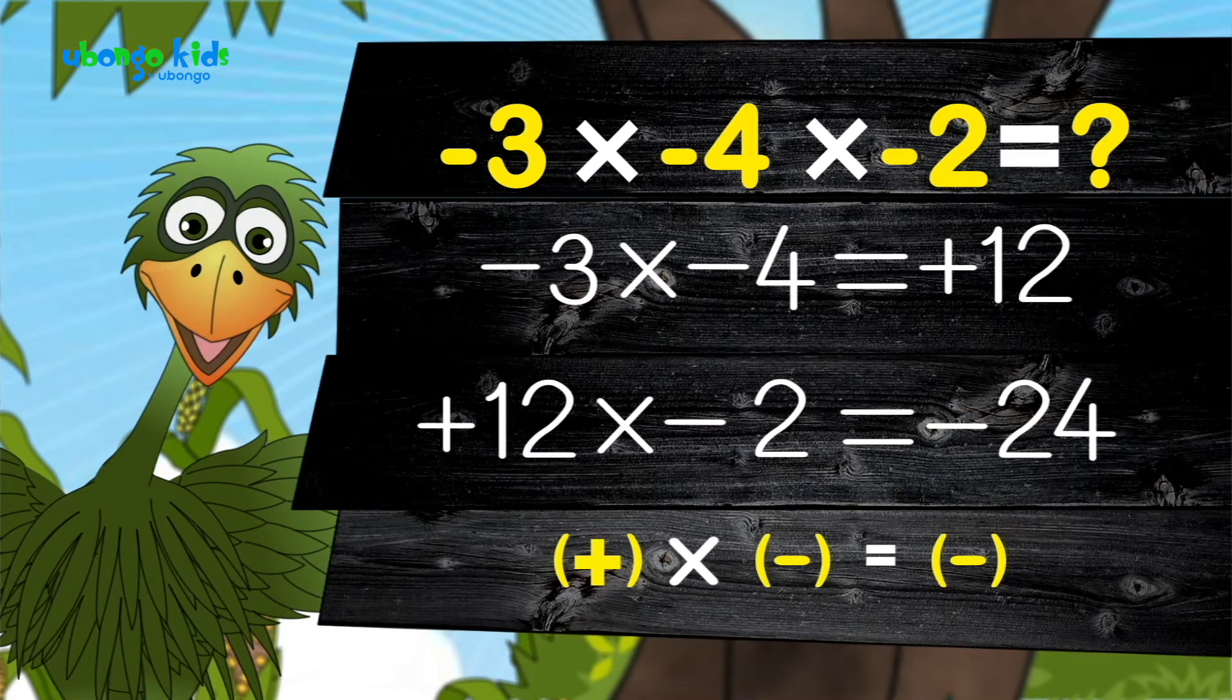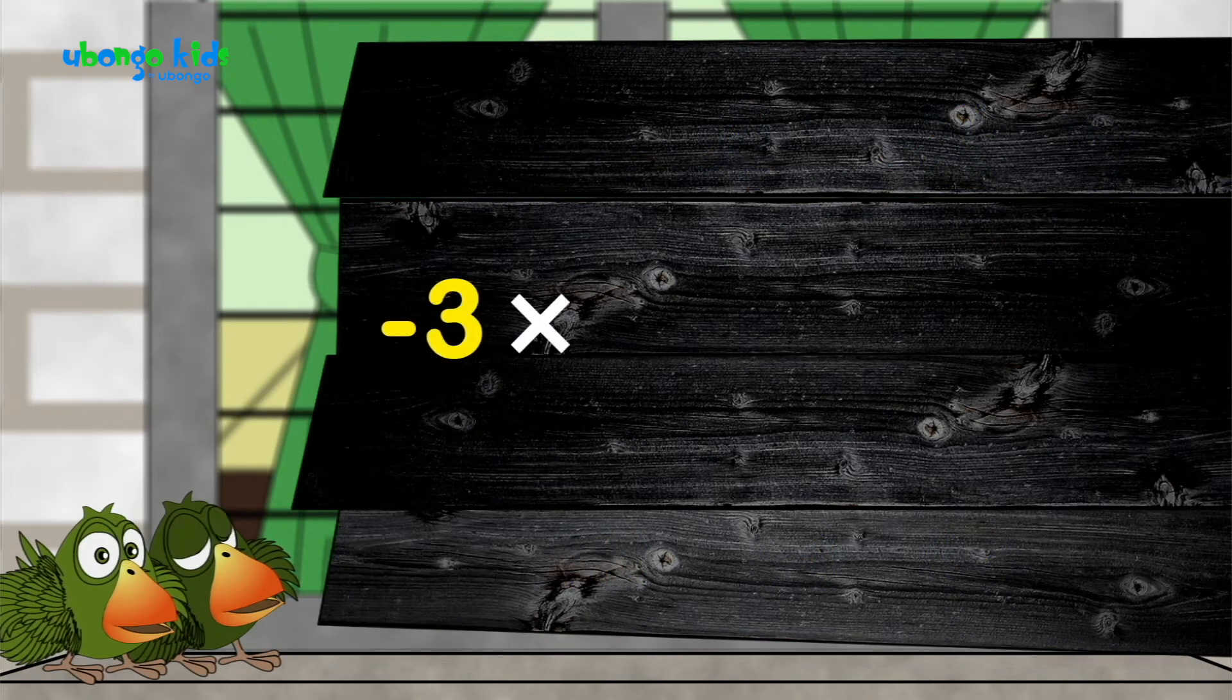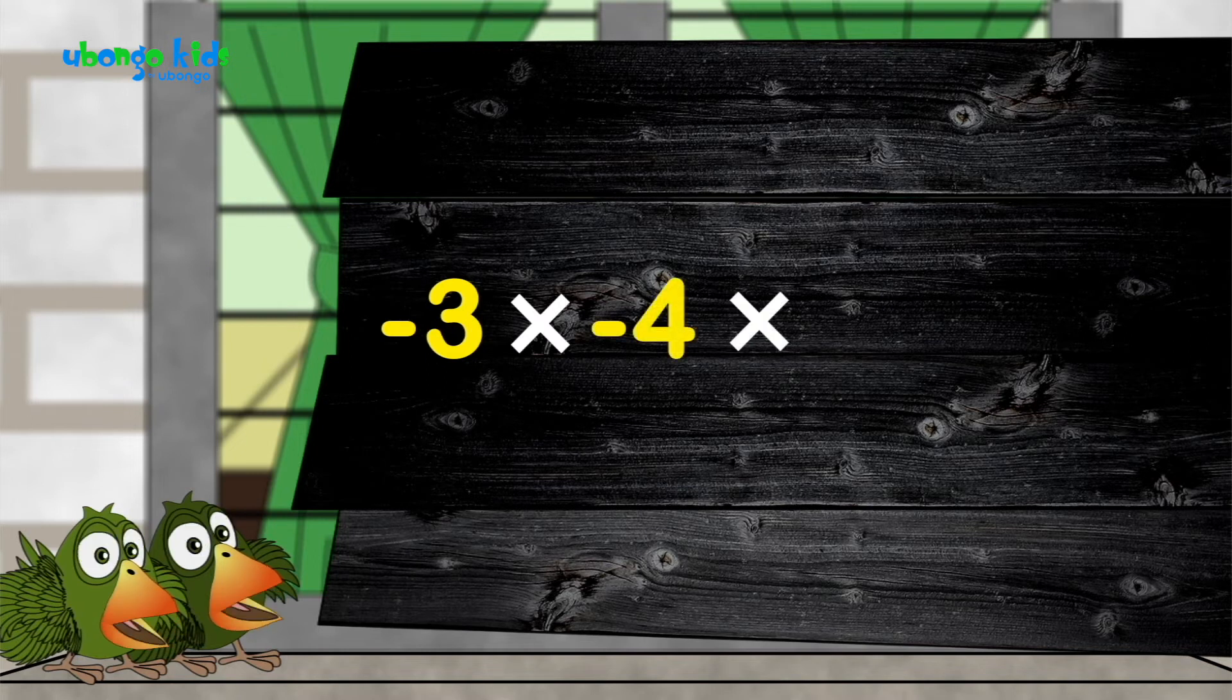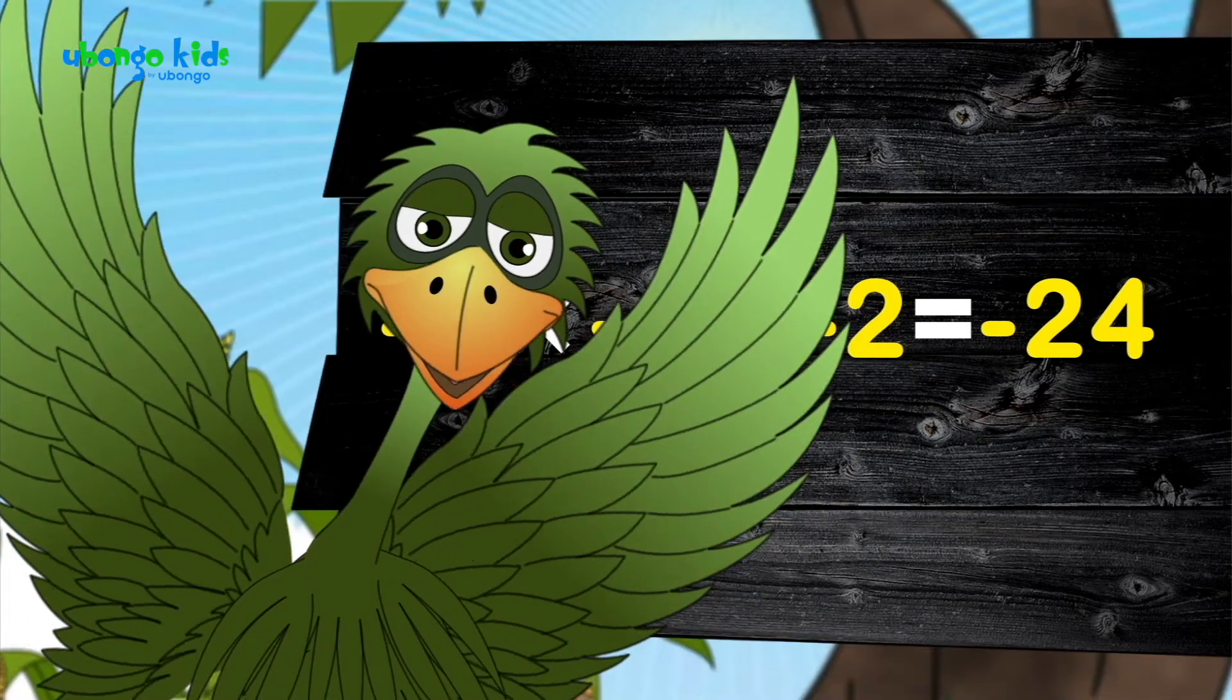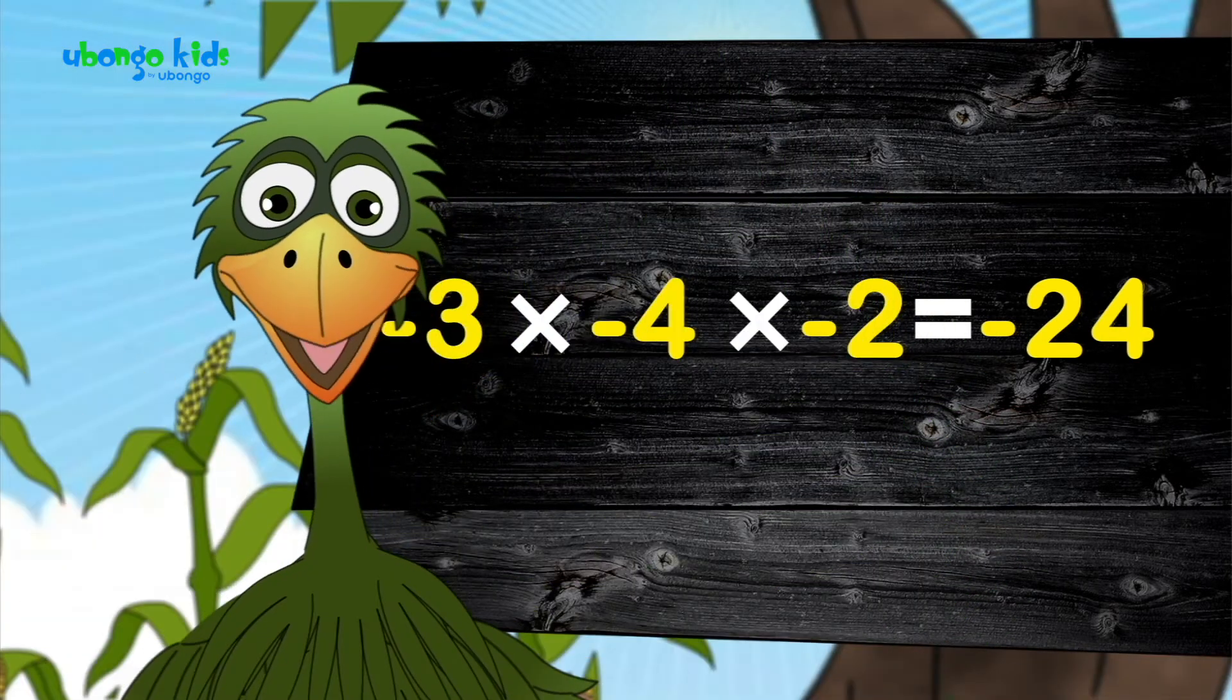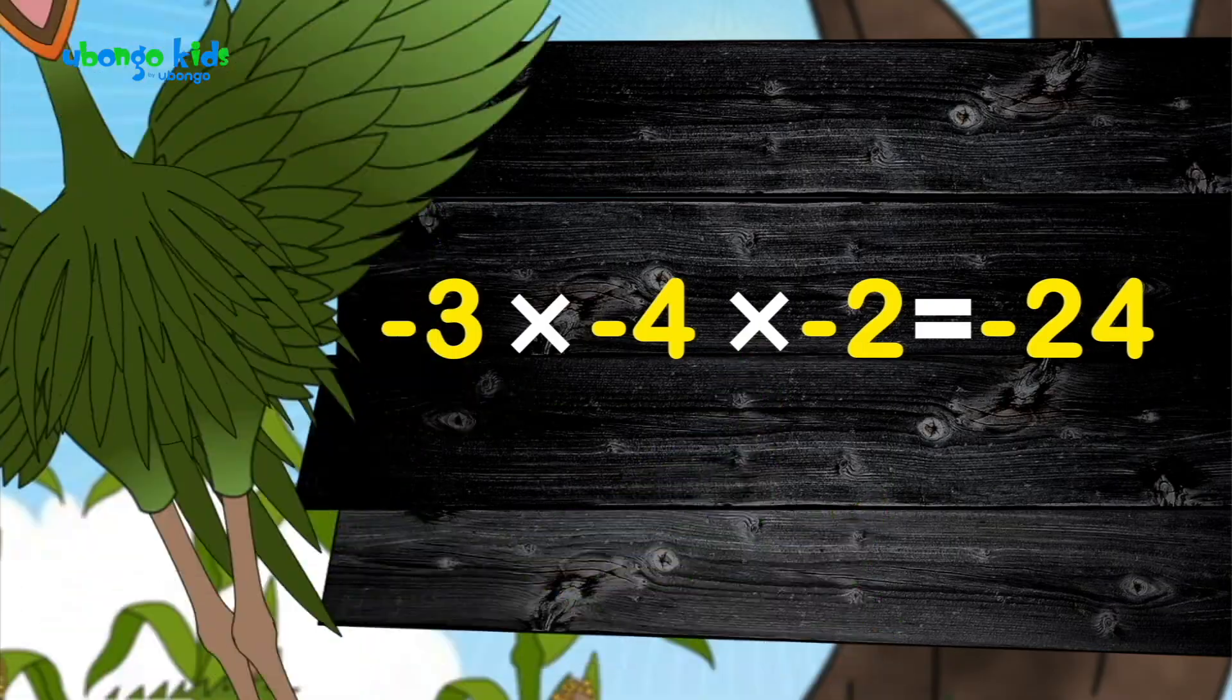So, all together, repeat for me. Negative three times negative four times negative two is negative twenty-four. Wonderful! You make me happy!